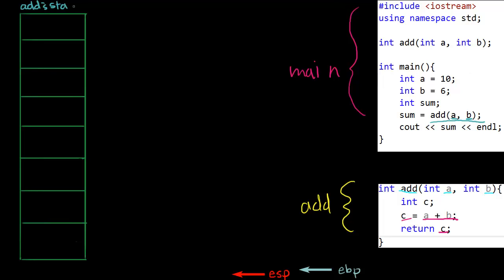So we want to see what happens inside `add`'s stack. When we call `add`, its arguments are going to get pushed onto the stack first, in order from the rightmost argument. So in this case `b` is our rightmost argument, so we push `b` onto the stack first, then we push `a` onto the stack.